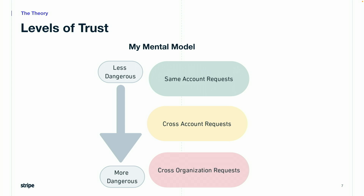This is my mental model for how dangerous different types of requests are. The safest are requests within the same account. In the middle are requests that are cross-account but stay within my AWS organization. And the most dangerous are requests that cross-account and leave my AWS organization. I'd like it so that almost any developer can enable requests within the same account, fewer can enable cross-account requests, and very few — maybe only the security team — have the ability to create cross-organization requests.